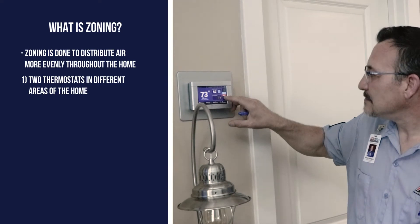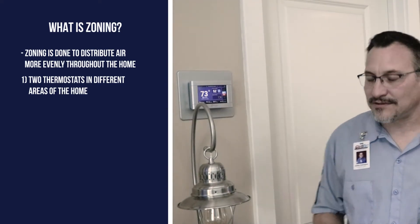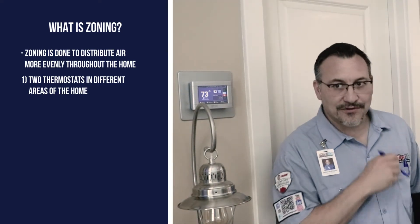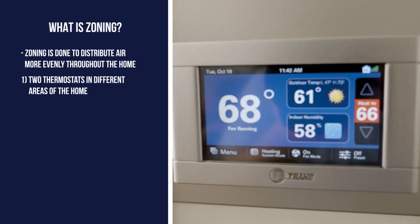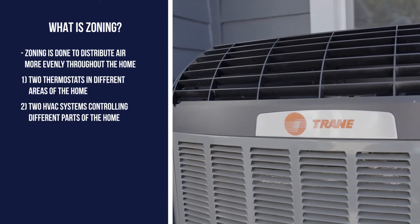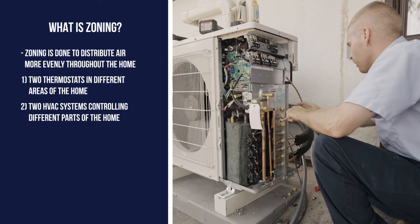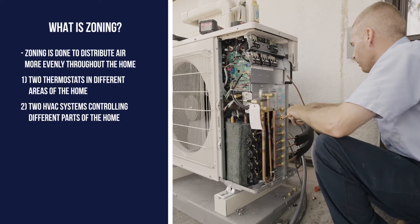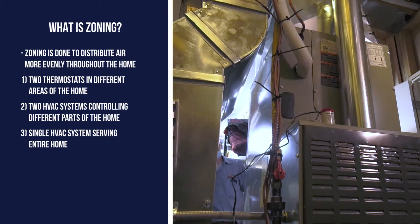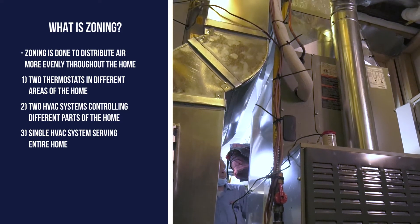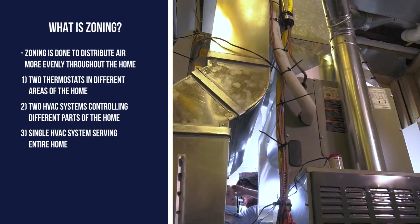The first is using two thermostats in different areas of the home, such as one on the first floor and the other upstairs. The second is using two HVAC systems that control different parts of the house. The third and last is a single HVAC system with the main line running from the furnace to different areas of the home.